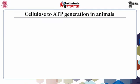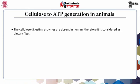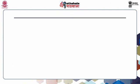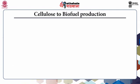Cellulose to ATP generation in animals: cellulose-digesting enzymes are absent in humans, so it is considered a dietary fiber. However, some animals such as termites and ruminants possess cellulose-digesting microbes, such as Trichonympha, in their guts. These microbes digest cellulose into glucose and produce energy in the form of ATP through metabolic processes.